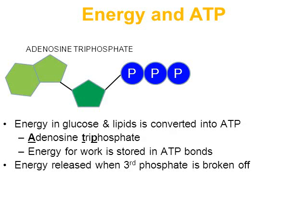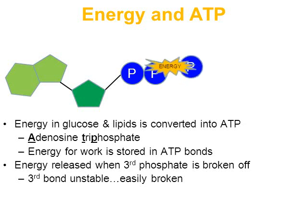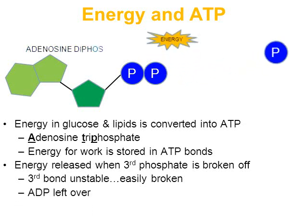In this more simplistic diagram, energy is released when that third phosphate is broken off. The bond that holds the second phosphate to the third phosphate is fairly unstable and easily broken. When that third phosphate is broken off, energy is released — usually in the form of heat — and that heat will stimulate cells to do various functions.